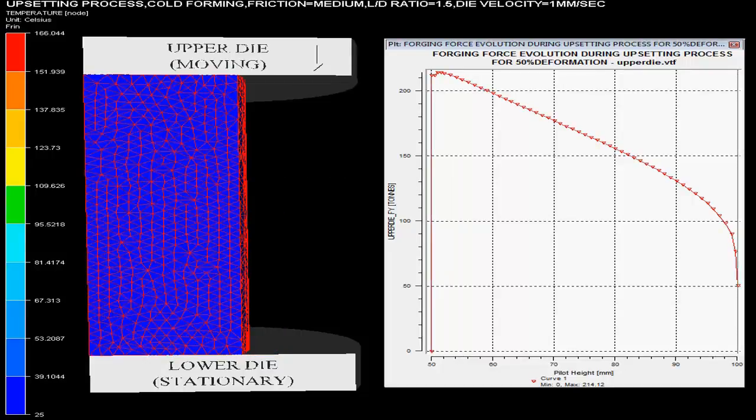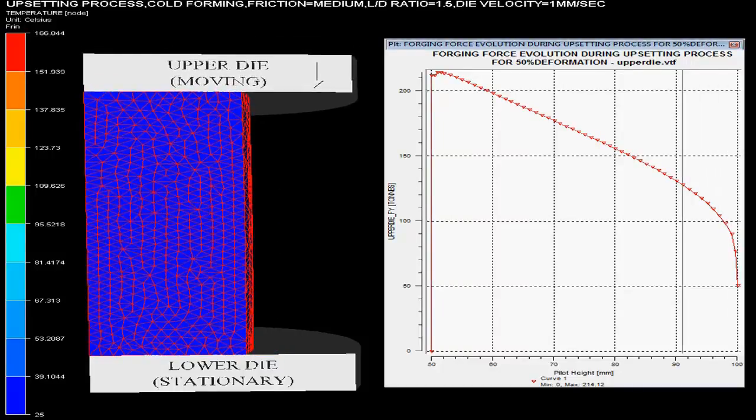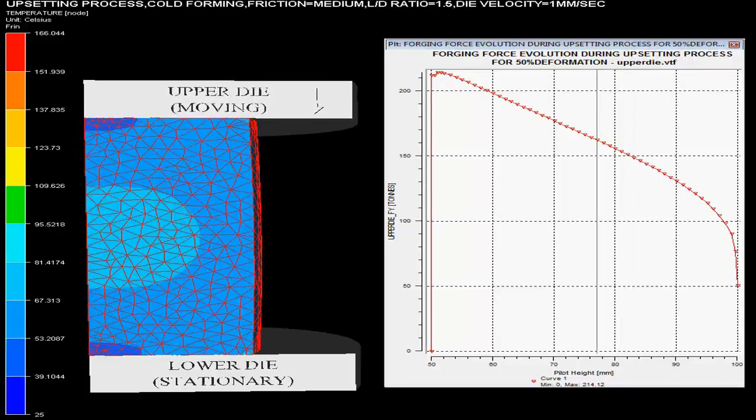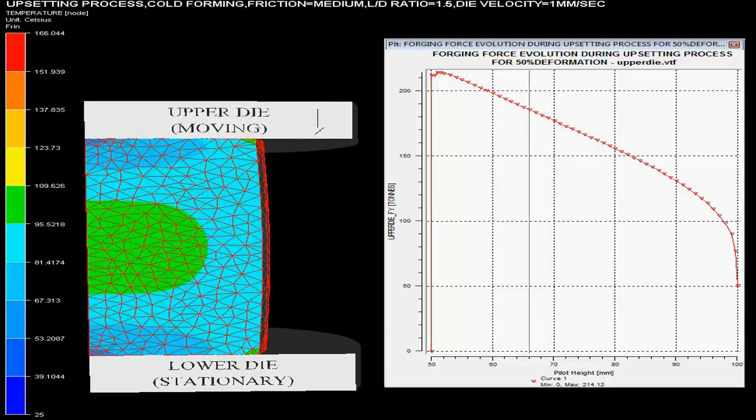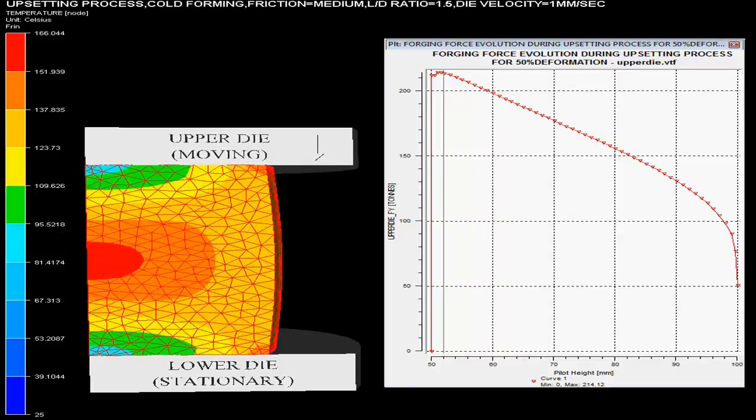The cold upsetting process for titanium billet is shown. The length by diameter or L by D ratio of the billet is 1.5 and the friction involved in the upsetting process is medium. The reduction produced after forging is 50% and the press used is mechanical press.